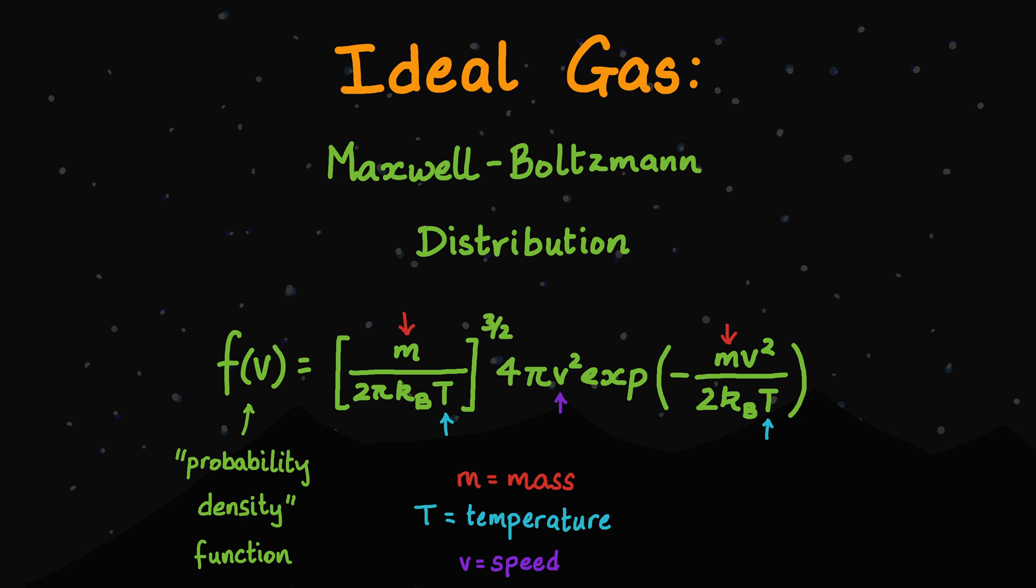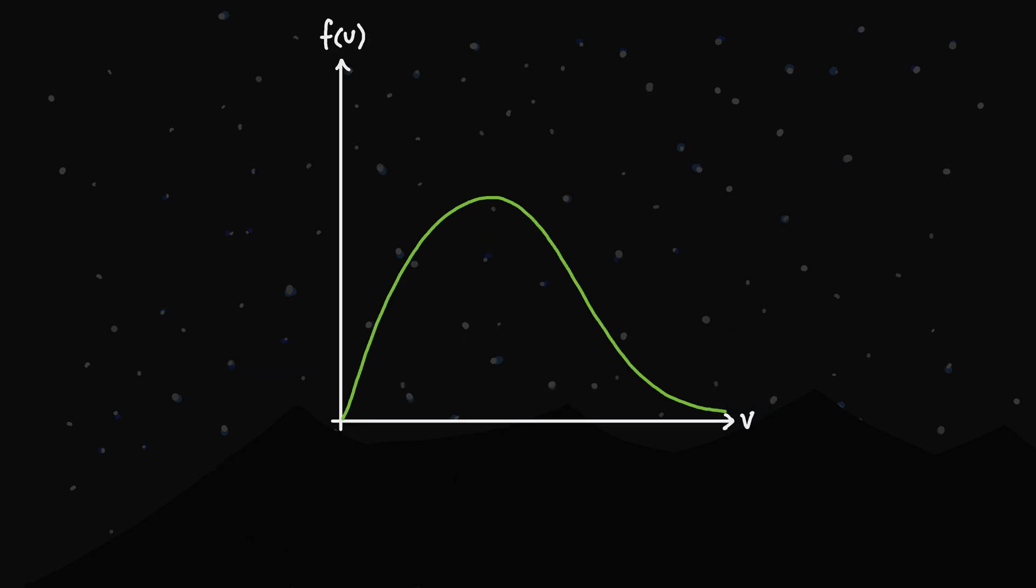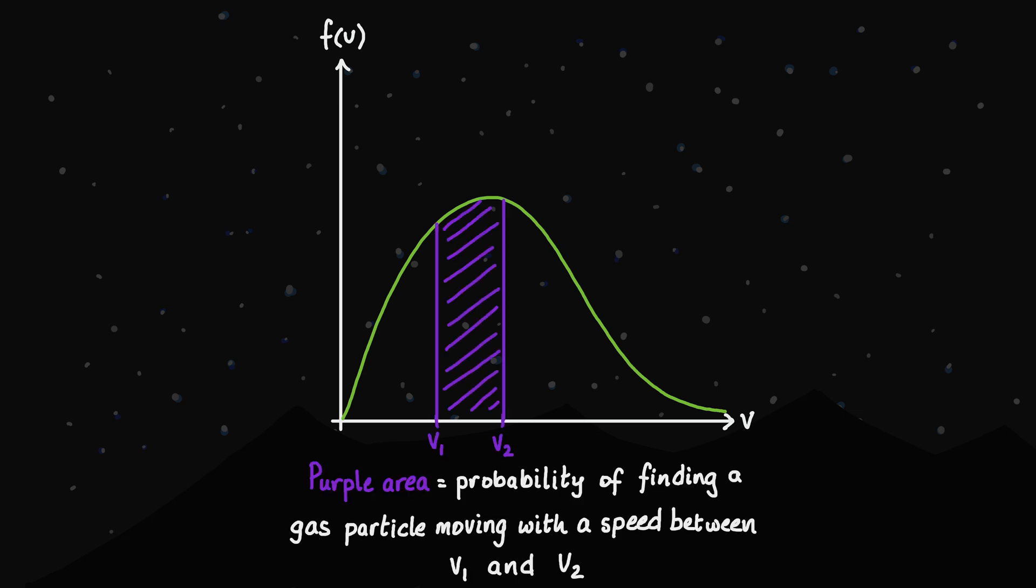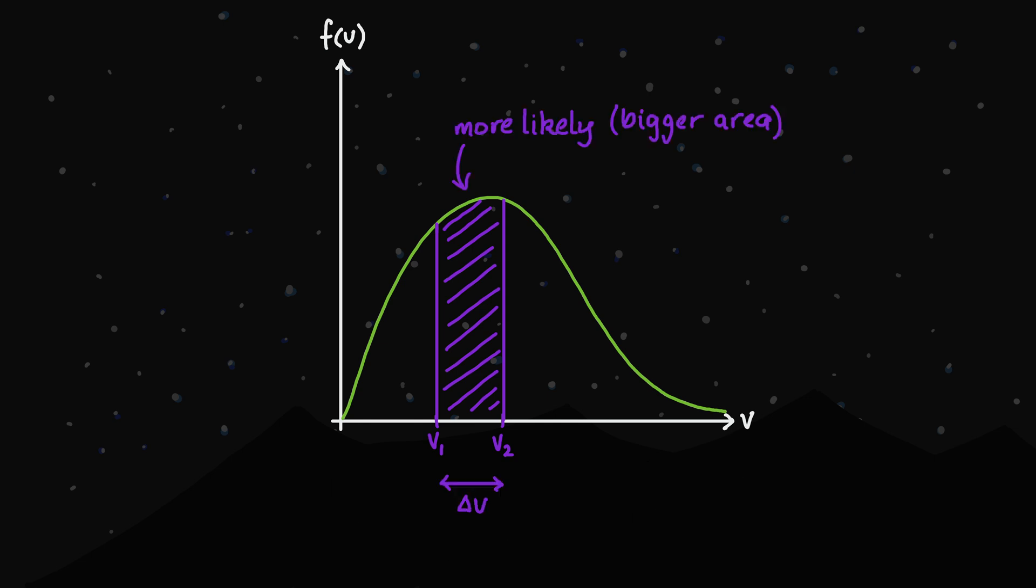What this equation shows is a probability density function. All that means is that if we plot this function F on the vertical axis and speed V on the horizontal axis, then the area under the graph between two speeds, V1 and V2, gives us the probability of finding particles in our gas that are moving with a speed in that range. So, we're more likely to find particles in this speed range than this speed range, even though the range in speed is exactly the same.